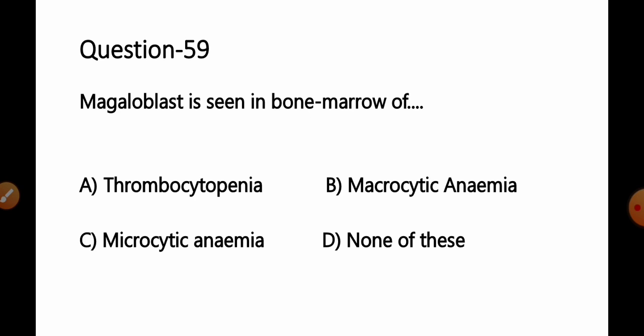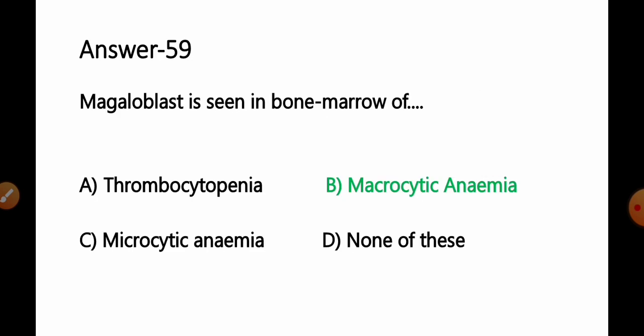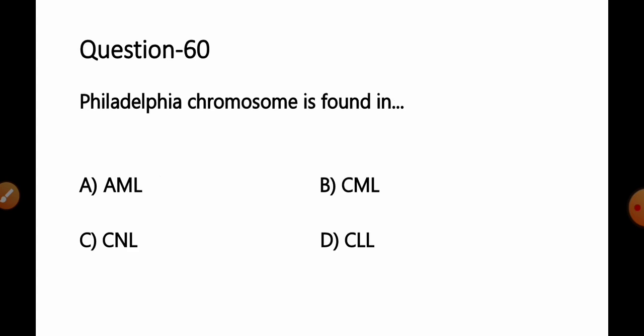Question number 59: Megaloblast is seen in the bone marrow of — option A: thrombocytopenia, B: macrocytic anemia, C: microcytic anemia, D: none of these. Megaloblastic anemia is a condition where bone marrow produces unusually large, structurally abnormal immature red blood cells (macrocytes). The most common causes are deficiency of cobalamin (vitamin B12) or folate (vitamin B9). Megaloblasts are seen in the bone marrow in macrocytic anemia. Option B is correct.